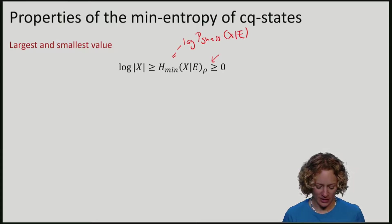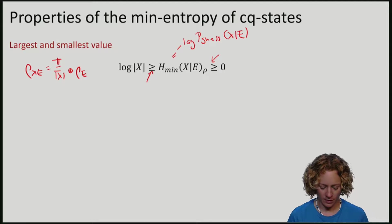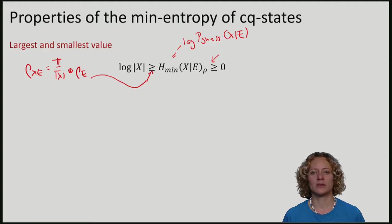The min-entropy is also never larger than the log of the number of possible values that x can take. And you can think that the worst situation for Eve to guess x is in fact the case where Eve is ignorant about x, meaning that the state rho is maximally mixed on x and uncorrelated from e. So for this state you attain the largest possible value.